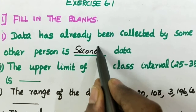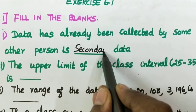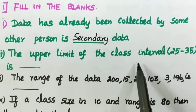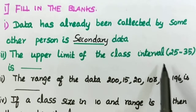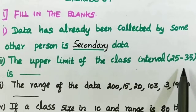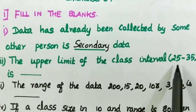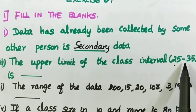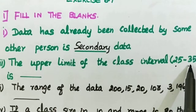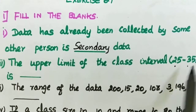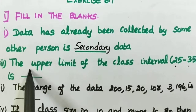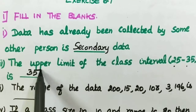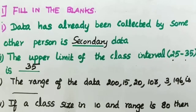The next one: the upper limit of the class interval 25 to 35. This one is the lower limit and this one is the upper limit.